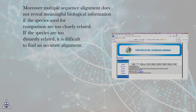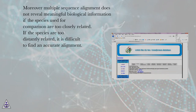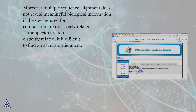Moreover, multiple sequence alignment does not reveal meaningful biological information if the species used for comparison are too closely related. If the species are too distantly related, it is difficult to find an accurate alignment. It therefore requires computational tools that bypass the requirement of sequence alignment completely and have the capability to identify short and scattered conserved regions.